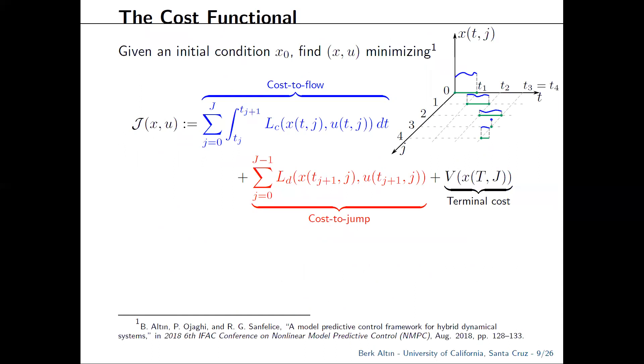We already have implicit constraints given by the flow and jump sets. So x, u should belong to the flow set during flows and jump set during jumps. Two additional constraints: the terminal time should belong to a set called the prediction horizon, and I'll elaborate on this next. And the terminal condition should belong to a terminal constraint set.